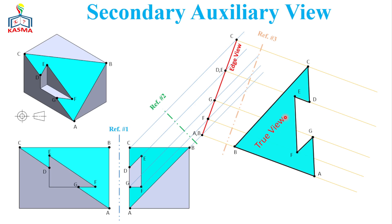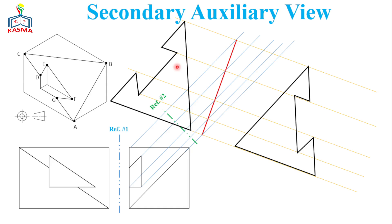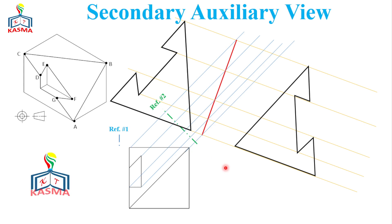At the end, we get the exact size and true view of the given oblique surface using the secondary auxiliary view. If you have space on the left portion, you can also place the auxiliary view there — it is just a mirror of the previous result and uses the same procedure. This concludes the video on secondary auxiliary view. If you enjoyed the video, please like, share, and subscribe to our channel.